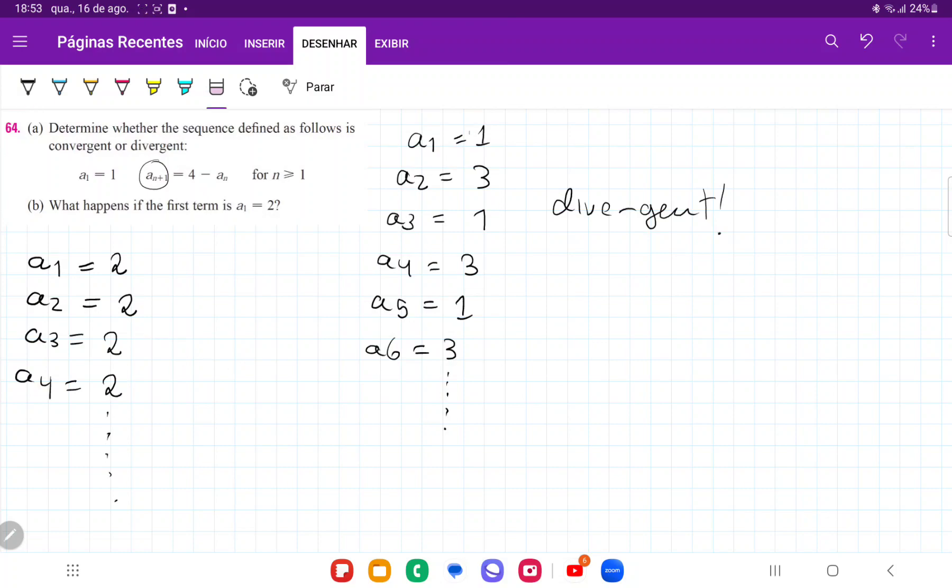For this one, we can see that we can't get out of this value 2. Because the whole thing begins at 2, and then the next one is 4 minus 2, which is 2, and then 4 minus the previous one, which is also 2, and so on and so forth.